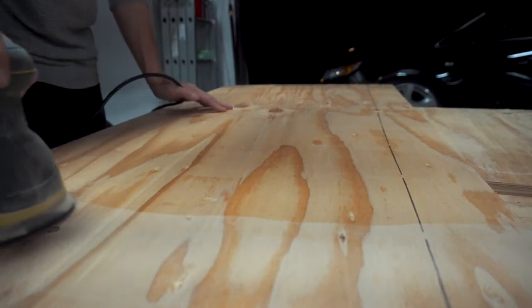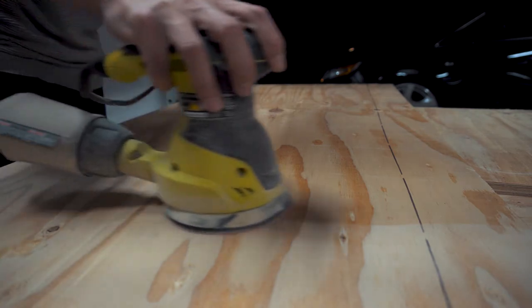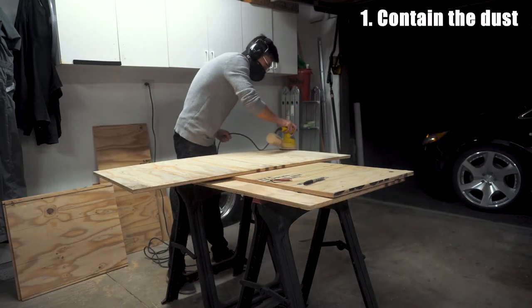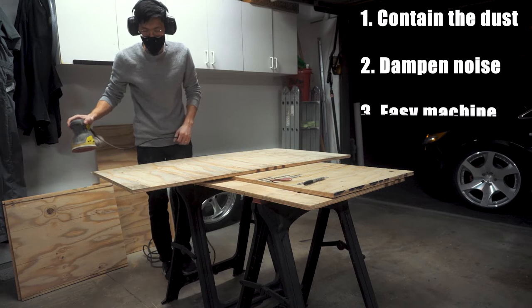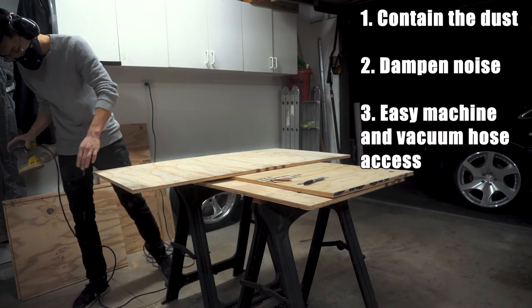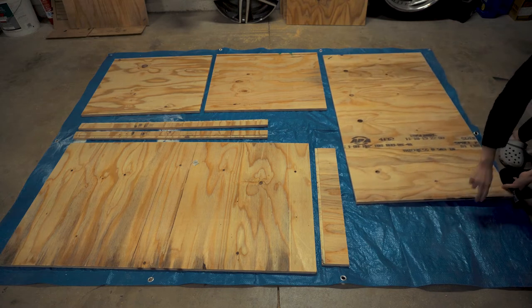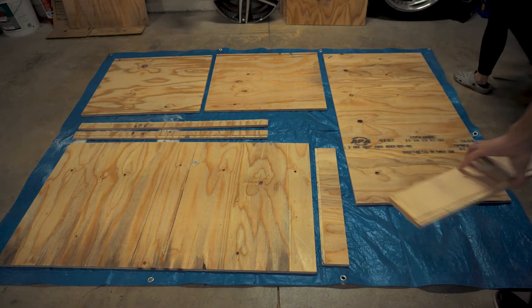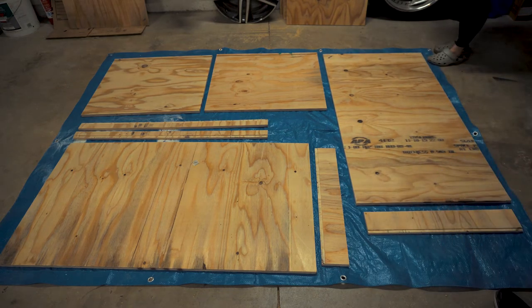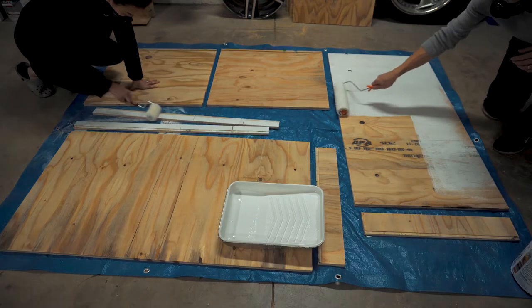Our criteria for this enclosure is pretty simple. Number one, contain the dust. Number two, dampen the noise. Three, easy machine and vacuum hose access. Last but not least, it should be sufficiently lit for maximum viewing pleasure, so we painted the interior walls white.